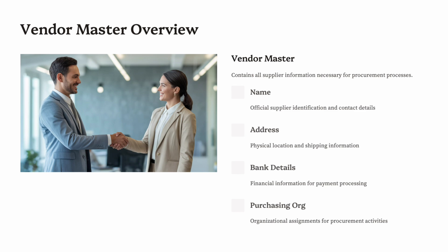Section 3: Vendor Master in SAP MM. Vendor Master contains all data necessary for managing supplier relationships and is shared across MM and FI modules. Vendor Master views include: General Data — name, address, bank details, tax information (shared across company codes); Company Code Data — payment terms, reconciliation account (specific to financial postings); Purchasing Data — order currency, Inco terms, purchasing group (relevant to procurement). Vendor Account Group determines the number range and which fields are mandatory, optional, or hidden. Examples: domestic vendors, foreign vendors, one-time vendors. Example: vendor Tech Supplies Ltd., address in Berlin, payment terms Net 30 days, currency EUR, reconciliation account 160000, purchasing group 001 IT.